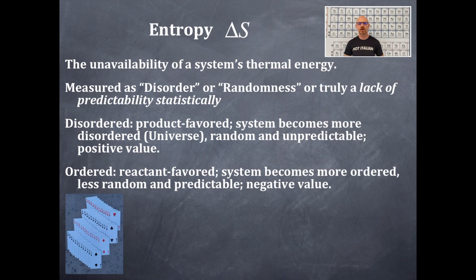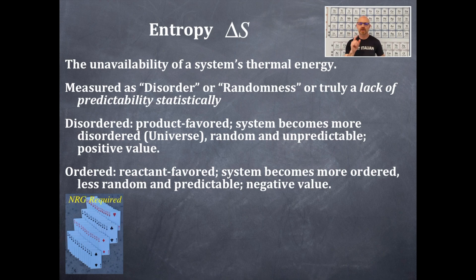If you look at this deck of cards, I've spent a lot of time organizing it. This deck has 52 cards and they are all ordered in numeric order by suit. That requires energy, and that is a delta S that is negative, because this is very ordered.